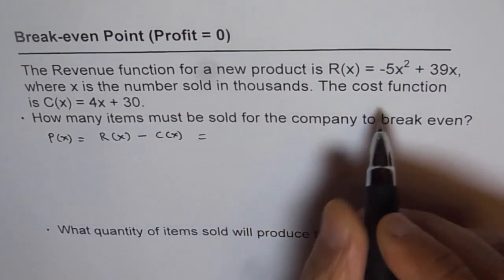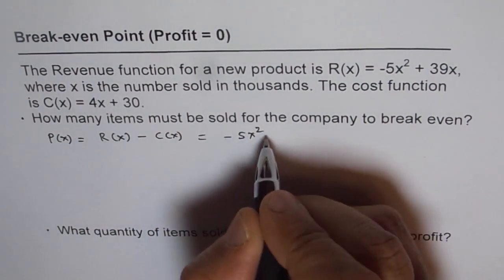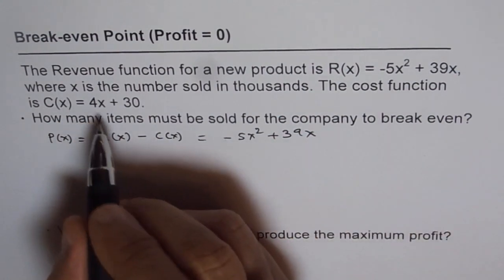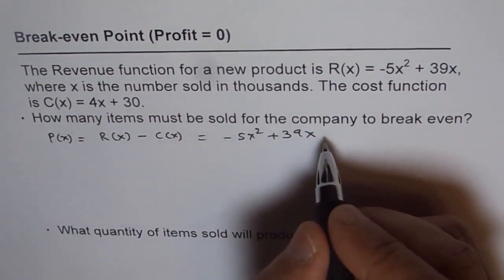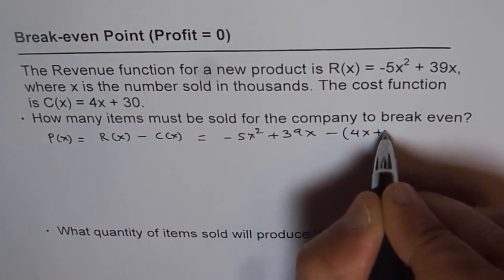So in this case, revenue is given to us as minus 5x² plus 39x, and the cost is 4x plus 30. So let's take away 4x plus 30.